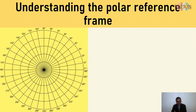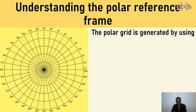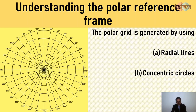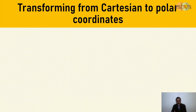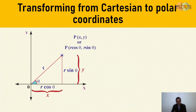Now let us try to understand the polar reference frame. We are not using rectangles anymore, but we are creating what is known as a polar grid by the use of radial lines. Radial lines are those lines originating from the origin, and then by concentric circles. So when you use radial lines and concentric circles, you get what are known as polar rectangles — not exactly rectangles, but at a micro scale they can be approximated by rectangles.